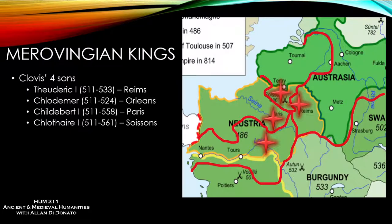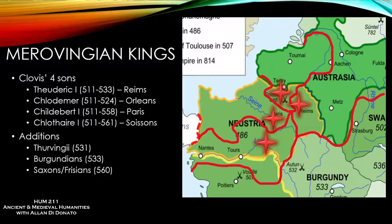Under these sons more territories were added — the Thuringian Goths were conquered by 531, the Burgundians by 533, and part of the Saxon and Frisian territories by 560 were subjugated and incorporated into the growing kingdom. The kingdom remained fairly divided until around 679, with the exception of a few brief reunifications along the way.